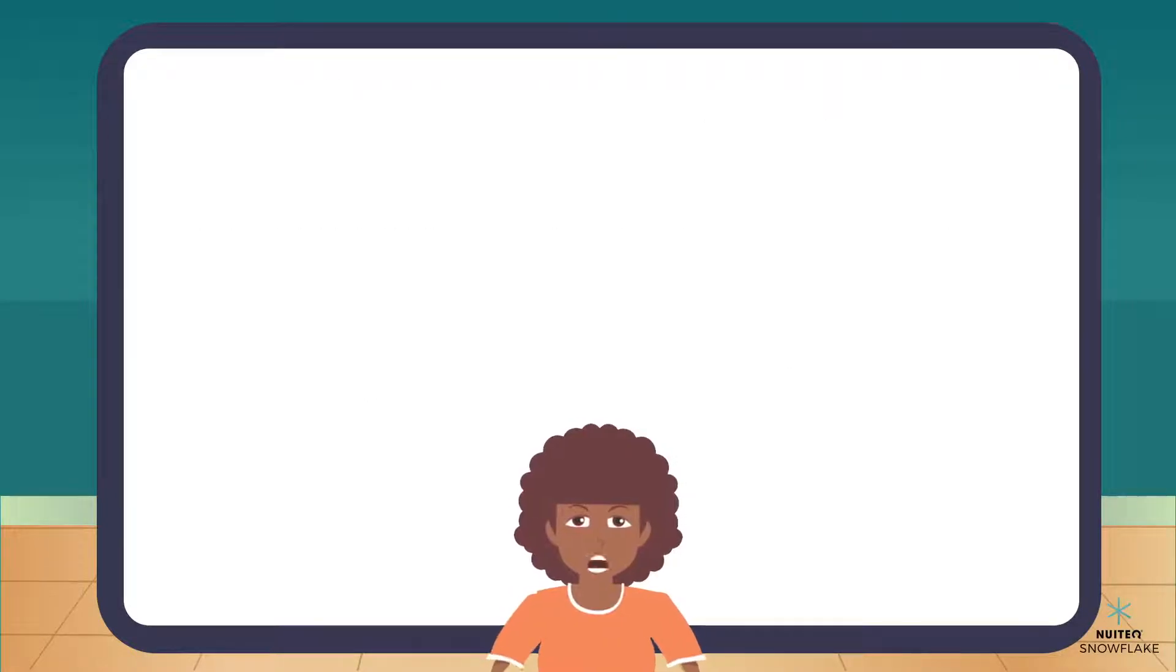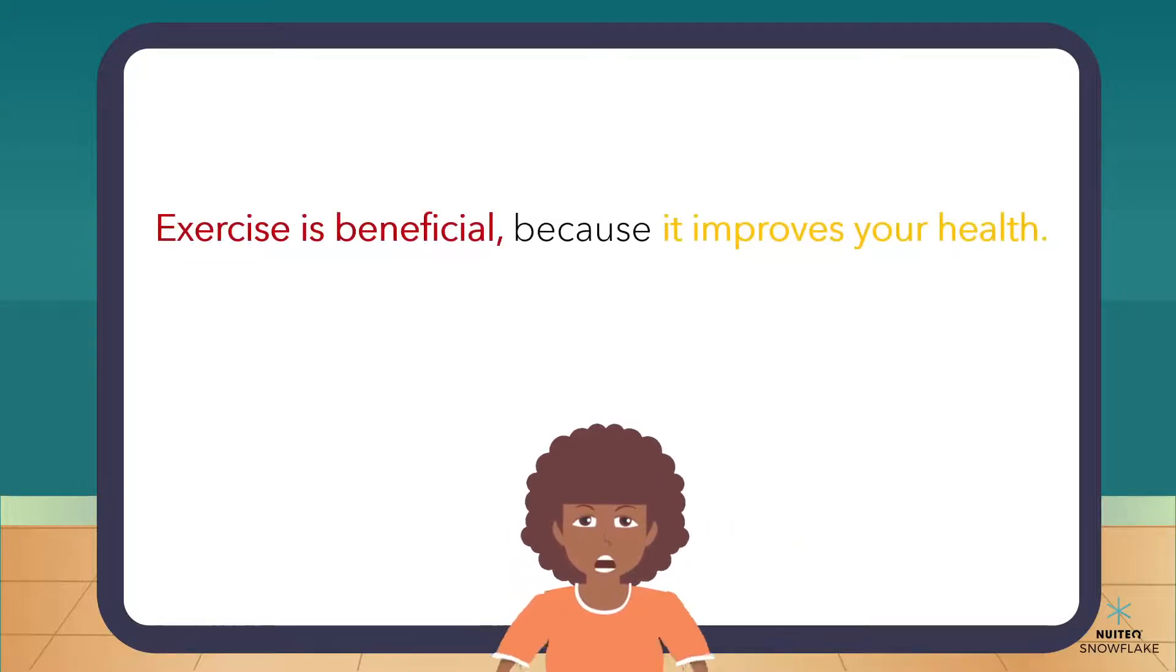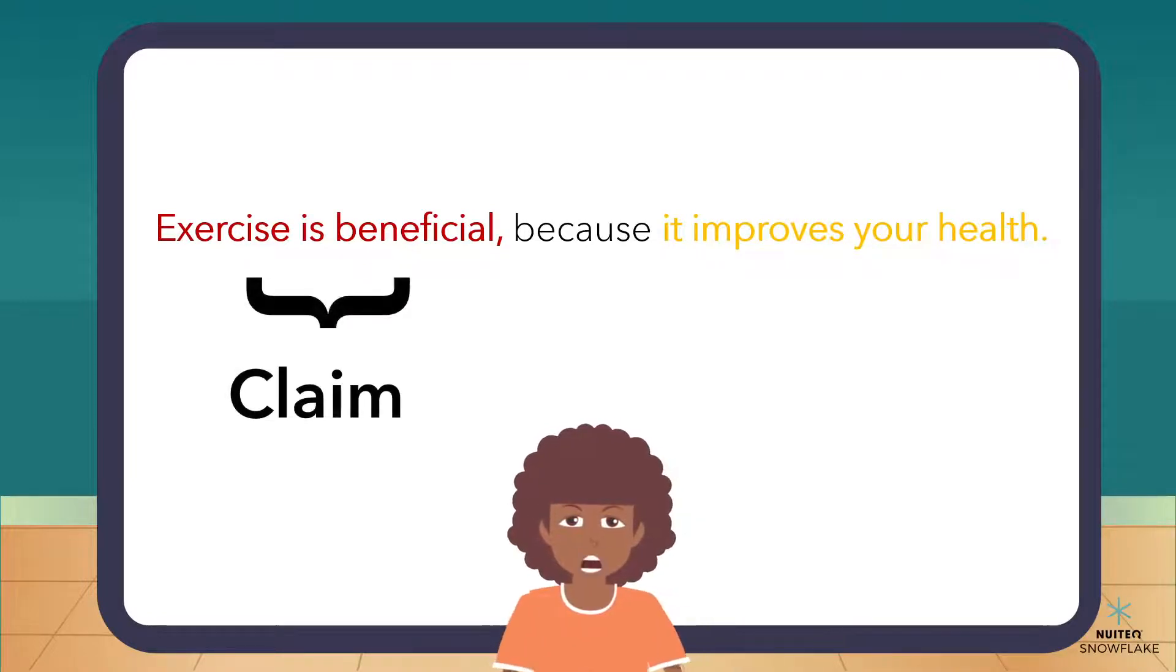Let's check out this example to better understand it. Exercise is beneficial, because it improves your health. The first part, in red, is the claim, and the second part, in yellow, would be the reason to support my claim.